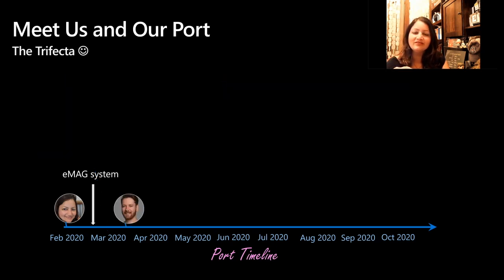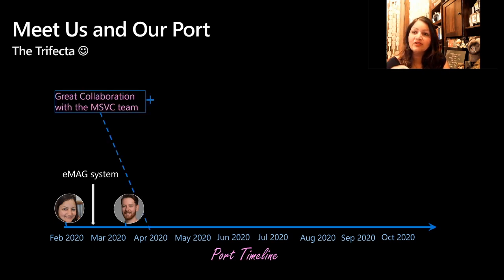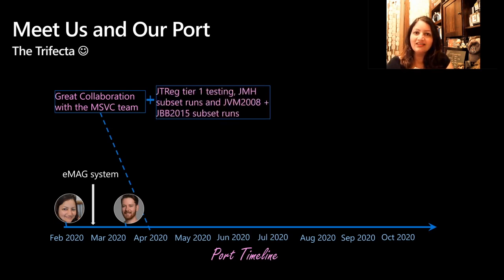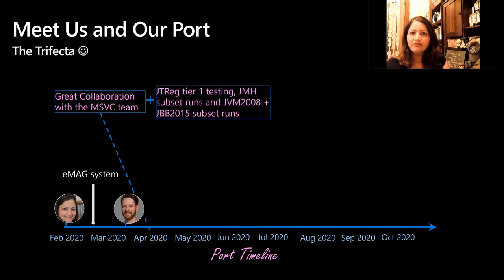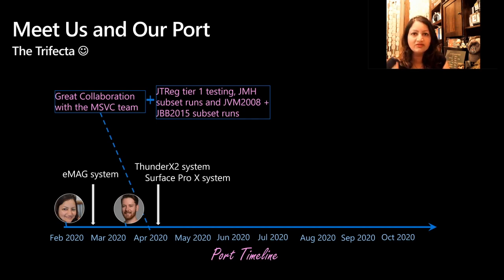After that, Ludovic joined the team. At the same time, we started interacting with the MSVC team and learning about the intrinsics. Ludovic also helped with bringing in JDREG testing, while I was trying to get benchmarks running — especially JMH, the Java Microbenchmark Harness. Around mid-to-end of April, we got our ThunderX2 and Surface Pro X systems, which helped a lot with scaling tests, since ThunderX2 has 256 hardware threads and could highlight concurrency issues that the EMAG system could not.